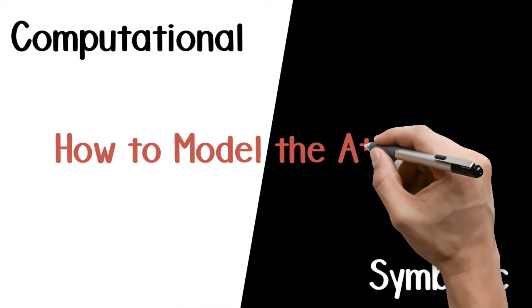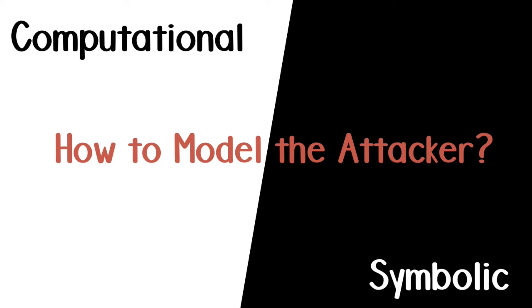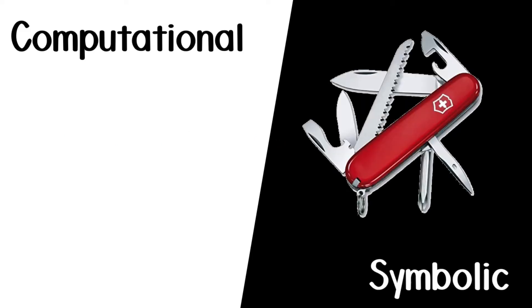The two main models for proving security are the computational and the symbolic model. The first big difference between the two models is how to model the attacker. In the symbolic model, the attacker has a fixed set of capabilities that he may combine however he wants, kind of like a Swiss army knife. In the computational model, the attacker can do almost anything, like MacGyver.